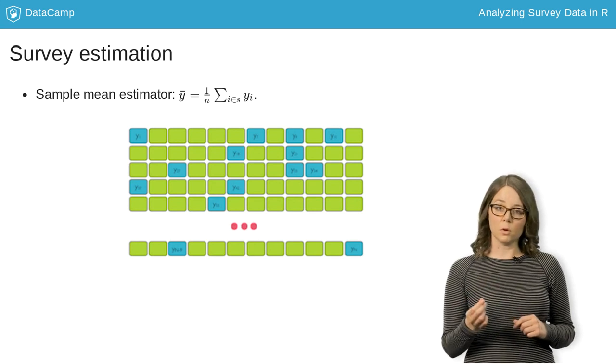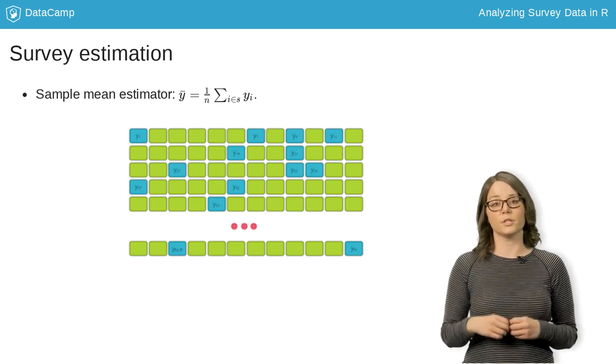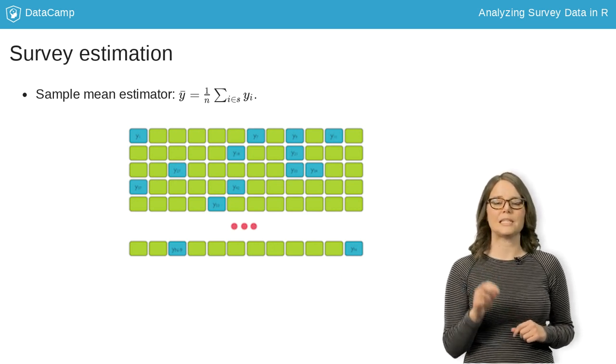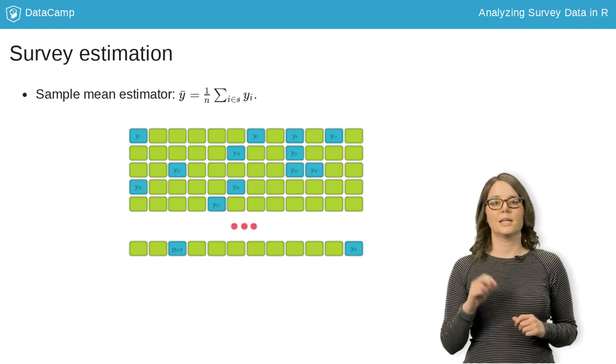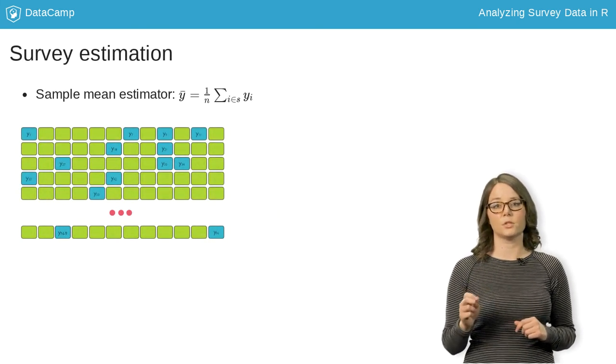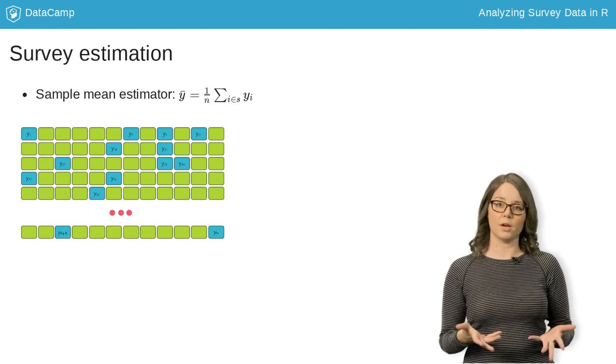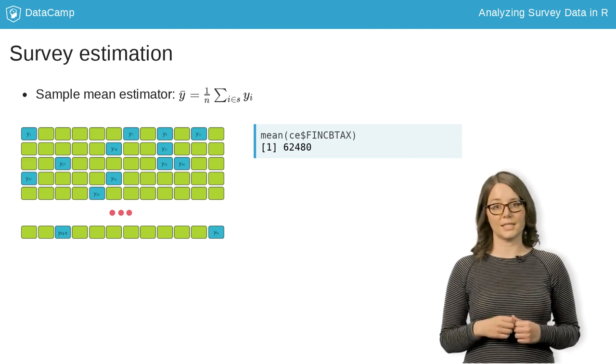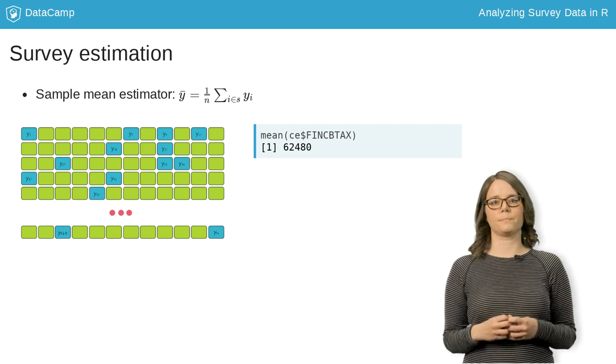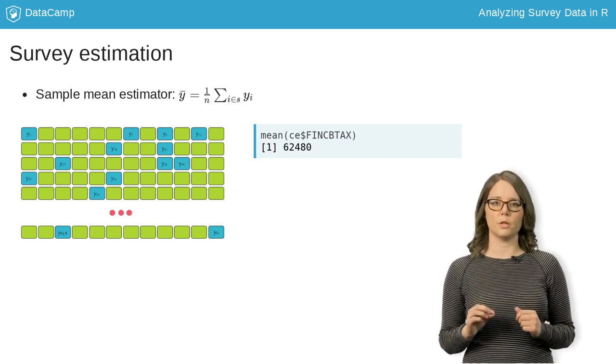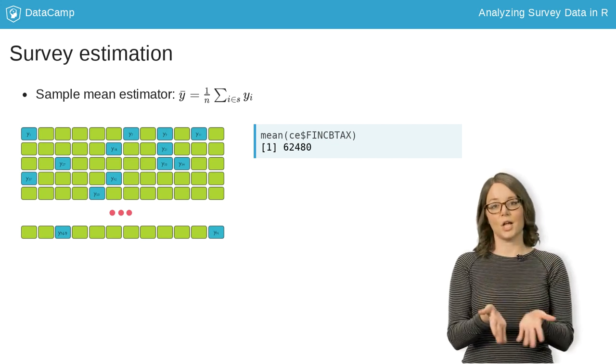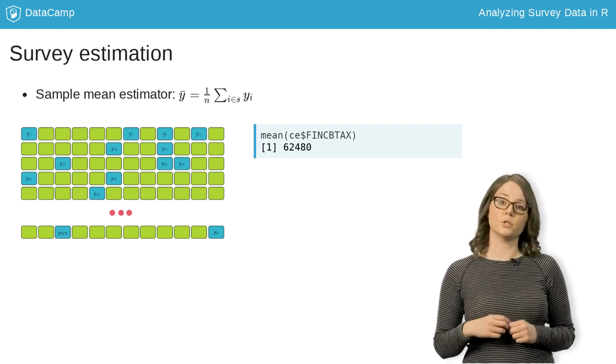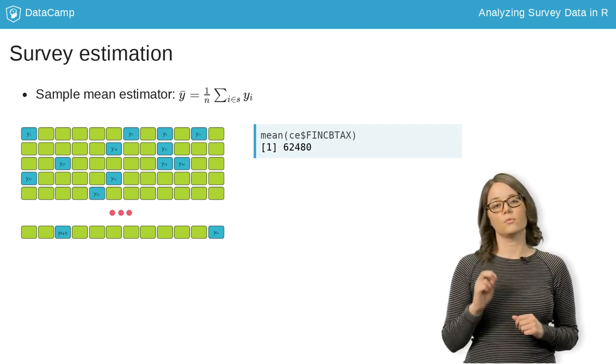Now, to estimate mu, we can calculate the sample average, which is called y bar. Y bar is the average income for the households in BLS's sample. To calculate the sample mean for the BLS survey, we must insert the income variable, FinkBtax, from the consumer expenditure dataset, denoted by CE, into the mean function. Remember, we can call a variable using the syntax dataset, dollar sign, variable name. The average household income for the consumer expenditure sample is $62,480.